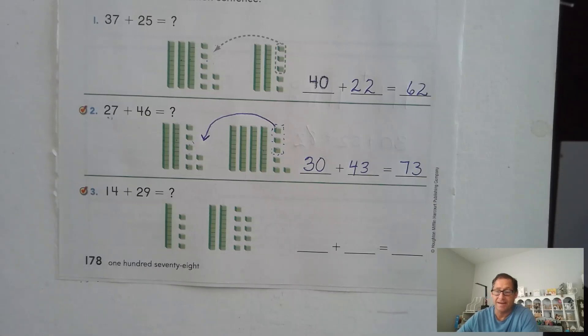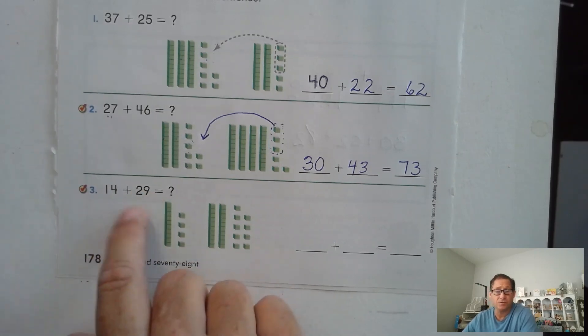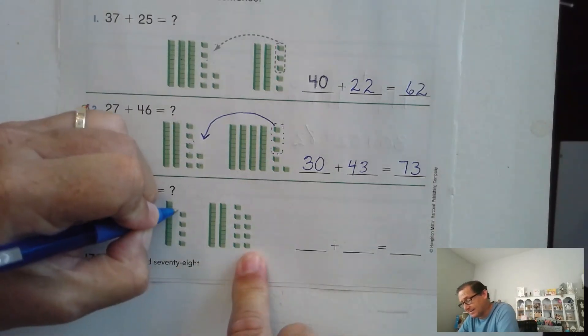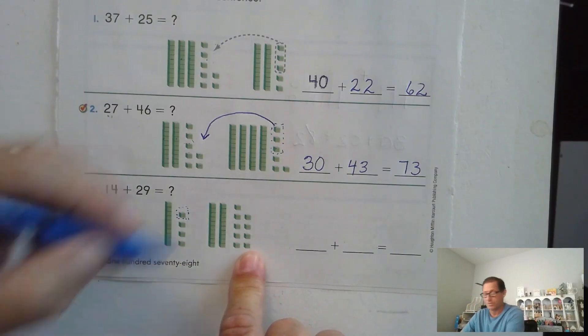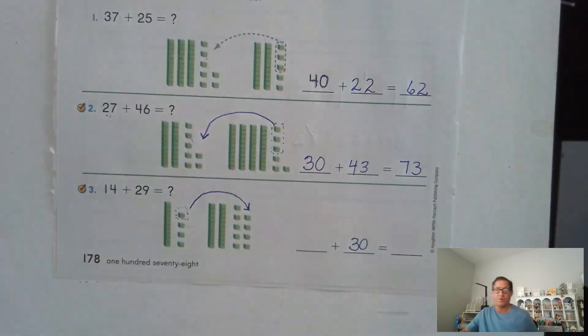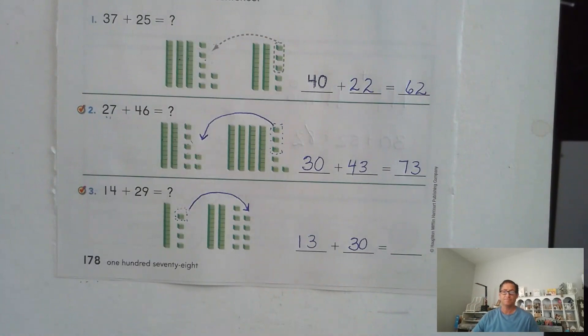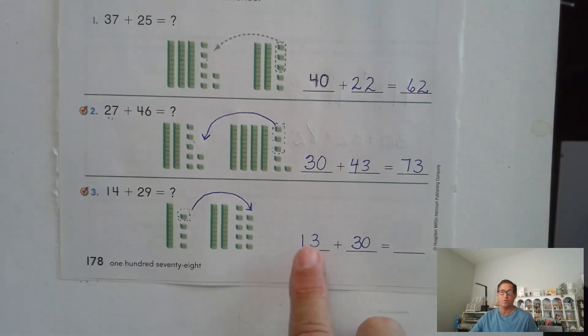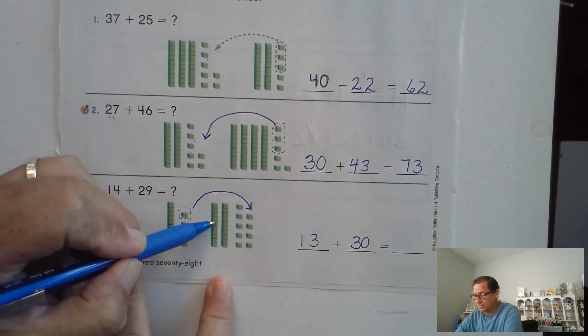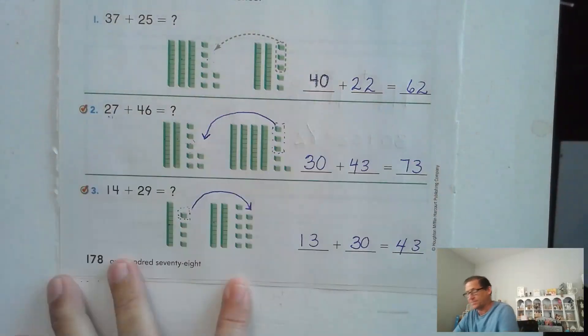14 plus 29. Again, it doesn't matter which one you take the ones from to make the next 10, but 29, that's really close to the next 10. So I'm going to look at the 29, and I'm just going to take one of the ones from 14 to make another 10. So I'm changing the 29 to 30. And what do I have left from the 14? I have one 10 and three ones. So 30 plus one more 10 is 40, 41, 42, 43, right? So we have one 10, two, three, four tens. Four tens is 40, and we have three ones, so 43.